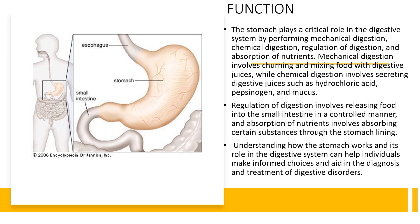Mucus protects the stomach lining from the corrosive effects of the acid and enzymes. The stomach also regulates the rate of digestion and absorption of nutrients by releasing food into the small intestine in a controlled manner. This release is regulated by a sphincter, a muscular valve that opens and closes to allow food to pass through.